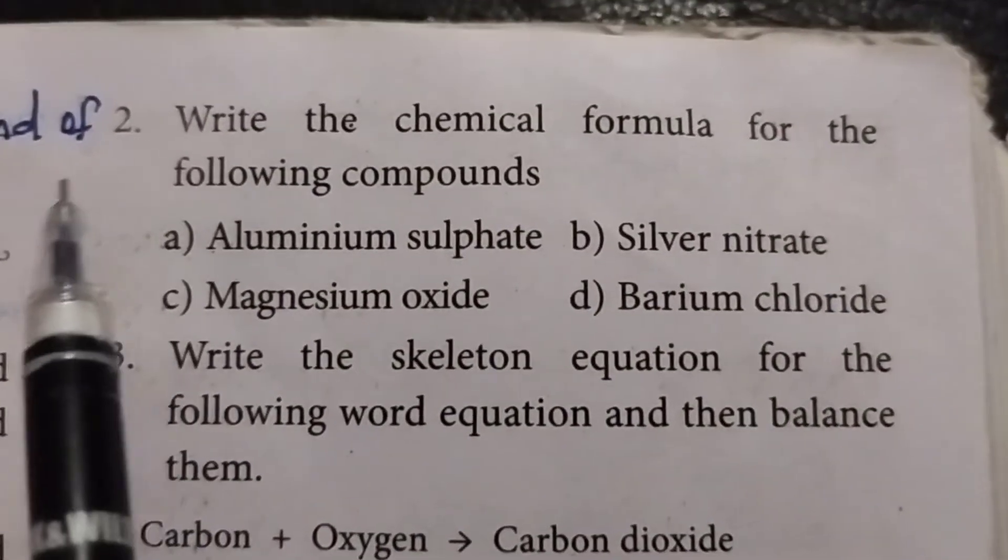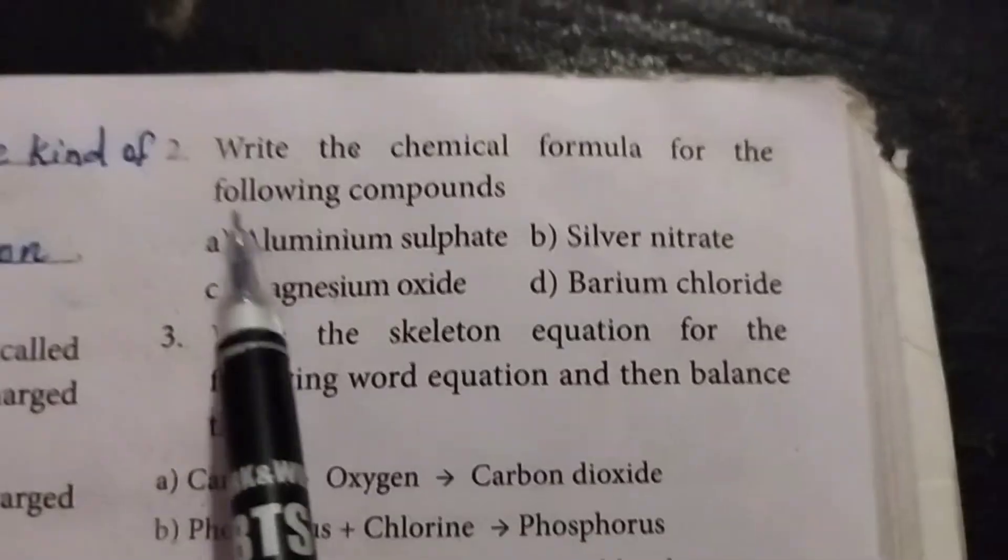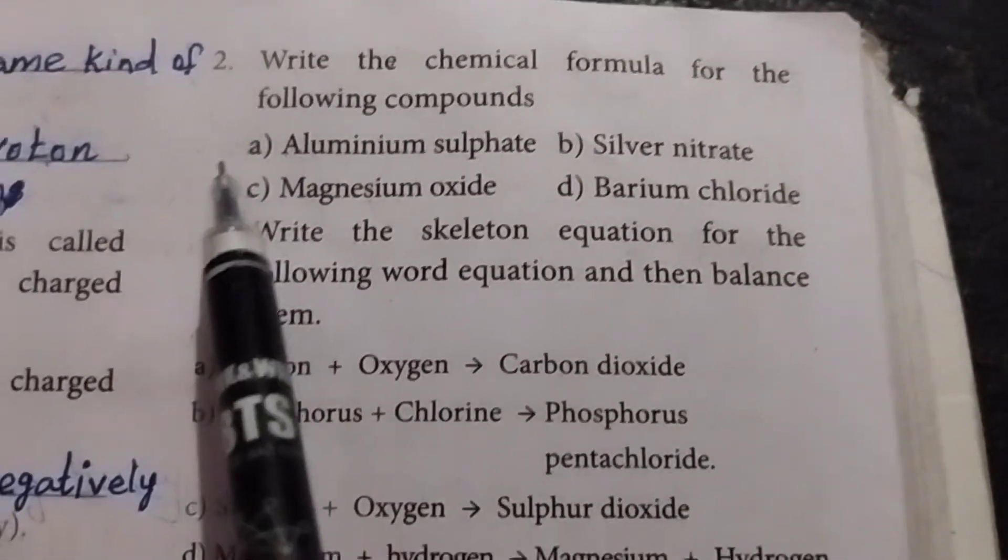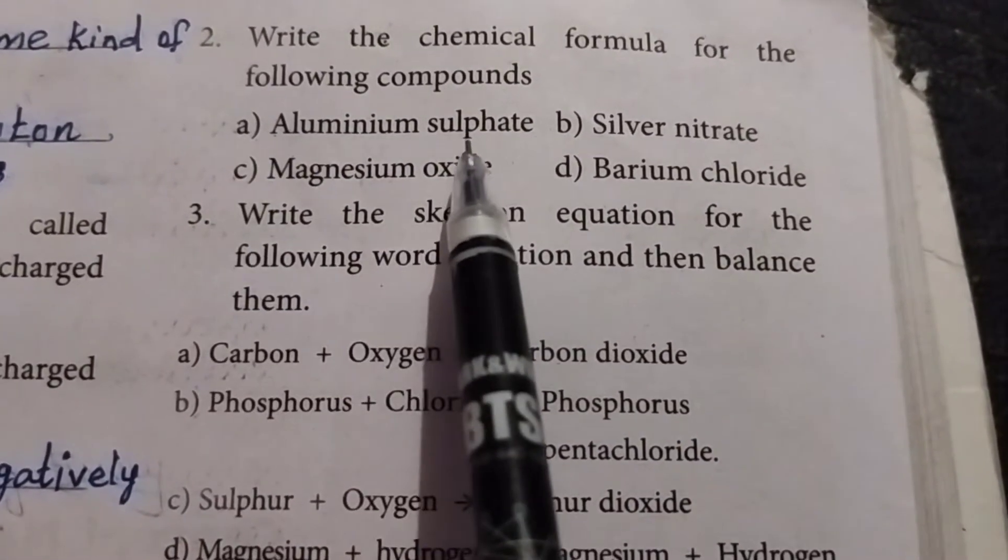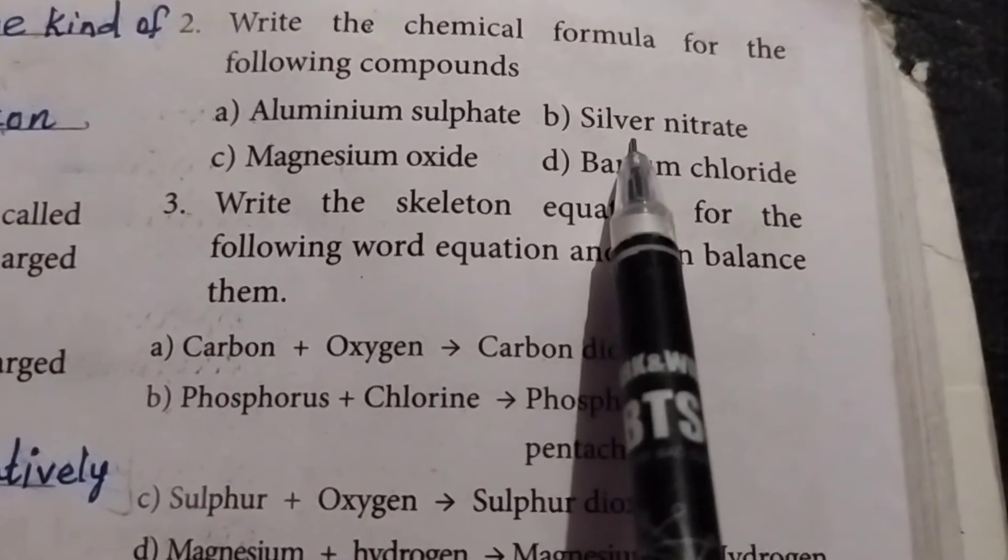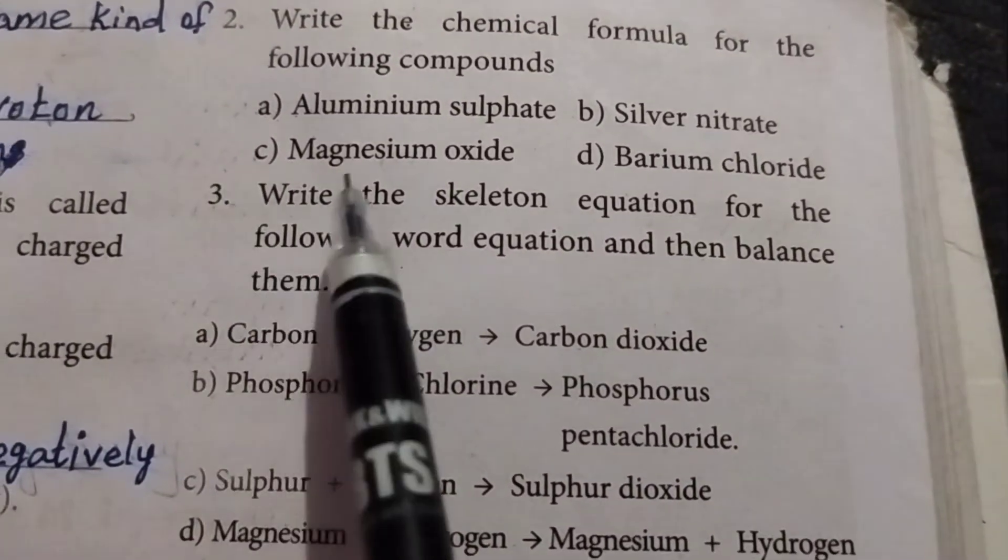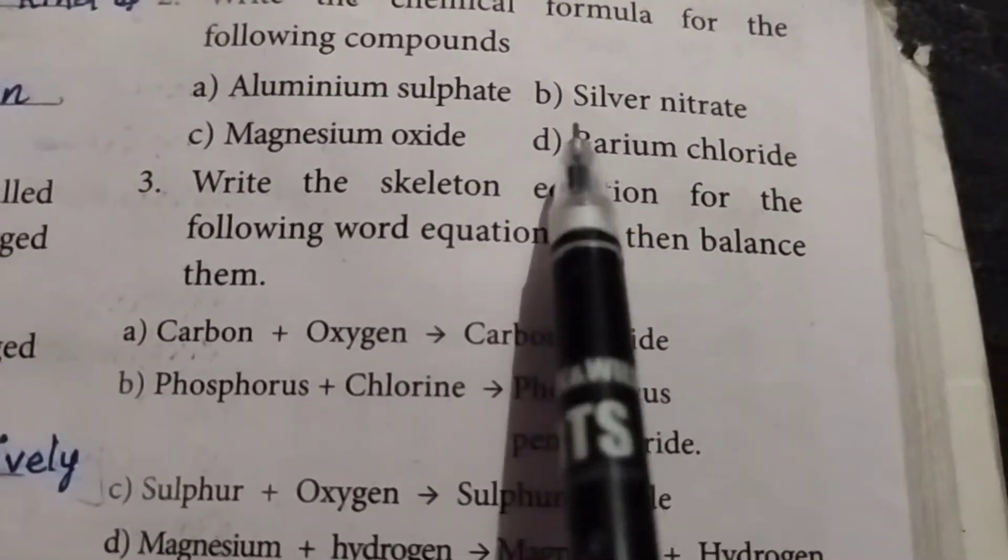Second question: write the chemical formula for the following compounds. Option A: aluminum sulfate. Option B: silver nitrate. Option C: magnesium oxide. Option D: barium chloride.